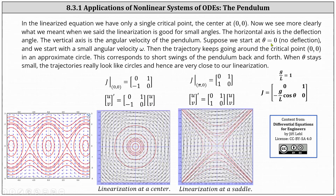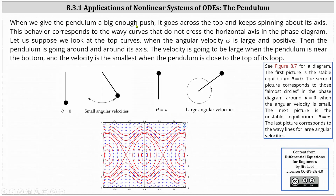Suppose we start at theta equals zero, meaning no deflection, and we start with a small angular velocity omega. Then the trajectory keeps going around the critical point zero comma zero in an approximate circle. This corresponds to short swings of the pendulum back and forth. When theta stays small, the trajectories really look like circles, and hence are very close to the linearization. When we give the pendulum a big enough push, it goes across the top and keeps spinning around its axis. This behavior corresponds to the wavy curves that do not cross the horizontal axis in the phase diagram.